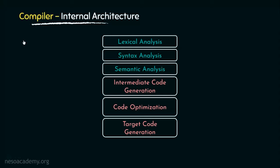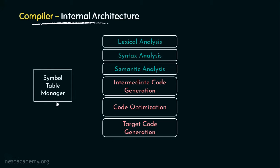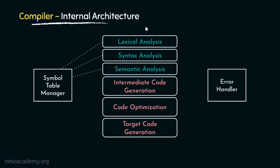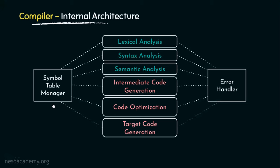In the session introduction we have seen the compiler's internal architecture, and specifically in the last session we have gone through a brief overview of all six phases. Now along with these six phases, the compiler has two more components: the symbol table manager and the error handler. The symbol table manager gathers all the information from the analysis phase, and those gathered information are used by the synthesis phase. The error handler works side by side with all six phases. Since it manages the symbol table, that is why it is named the symbol table manager.